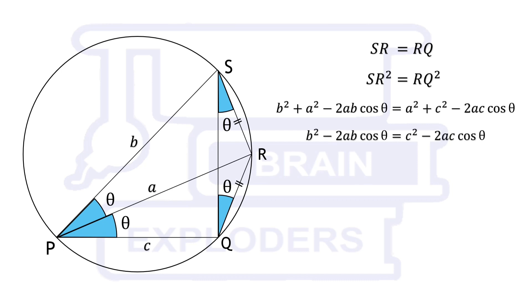a squared gets cancelled from both sides. On rearranging the terms we get a equals to (b plus c) over 2 cos theta.